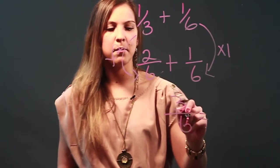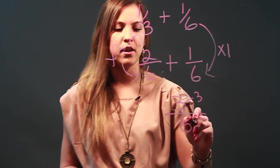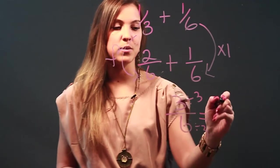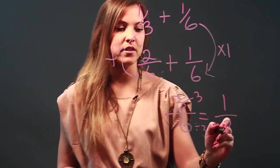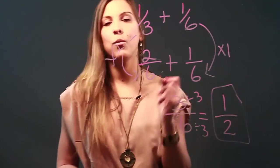But I can reduce that because the top and bottom can both be divided by 3. So 3 divided by 3 is 1, and 6 divided by 3 is 2. So my final answer would be 1 half.